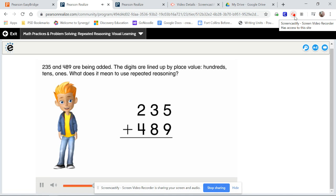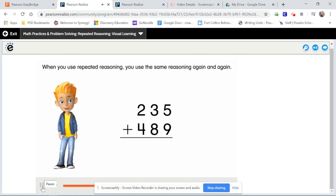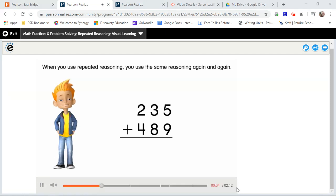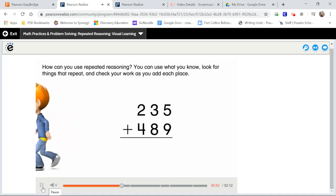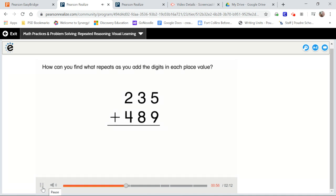What does it mean to use repeated reasoning? When you use repeated reasoning, you use the same reasoning again and again. How can you use repeated reasoning? You can use what you know, look for things that repeat, and check your work as you add each place. Think about what you know about adding numbers like these. How can you find what repeats as you add the digits in each place value?